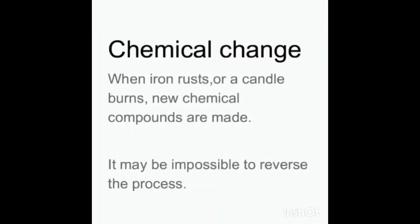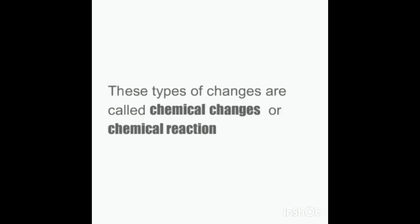Chemical change: when iron rusts or a candle burns, new chemical compounds are made and it may be impossible to reverse the process. These types of changes are called chemical changes or chemical reactions.